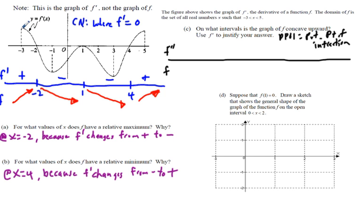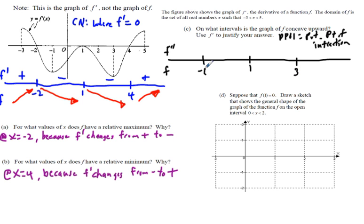We look for where the slope of f' of x changes. Between x equals negative 3 and x equals negative 1, the slope of f' of x is negative, so our first potential point of inflection is at x equals negative 1. The slope of f' increases up to x equals 1, giving a second potential point of inflection there. Between 1 and 3, the slope is negative, giving a third potential point of inflection at x equals 3. Note these PPOIs are different from the critical numbers found earlier.